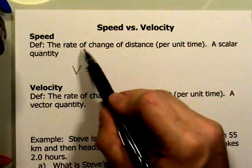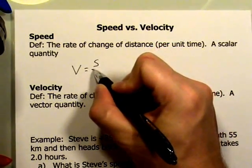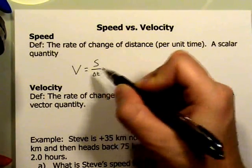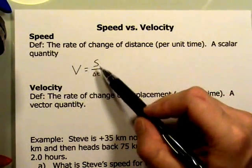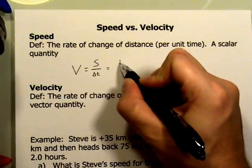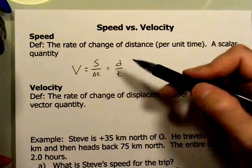So speed being the rate of change of distance, that would be the distance that you traveled. Per means divide. So V would be the distance over the time. Now you'll also sometimes see D over T. That's a very common notation.